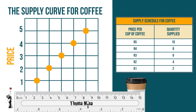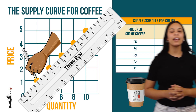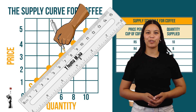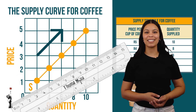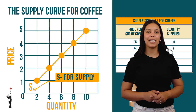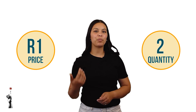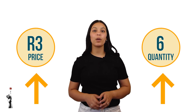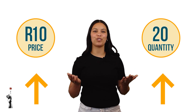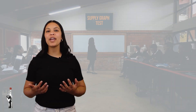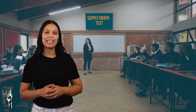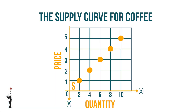We now need to connect the dots to indicate the supply curve. The supply curve is an upward sloping curve moving from left to right. This reflects a positive relationship between the price and the quantity supplied — when the one goes up, the other one will too. You will be awarded marks for the heading, the axes, the correct labels on each axis, and the plotting of the graph.